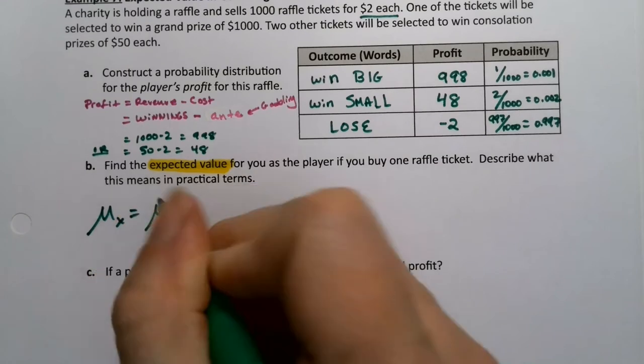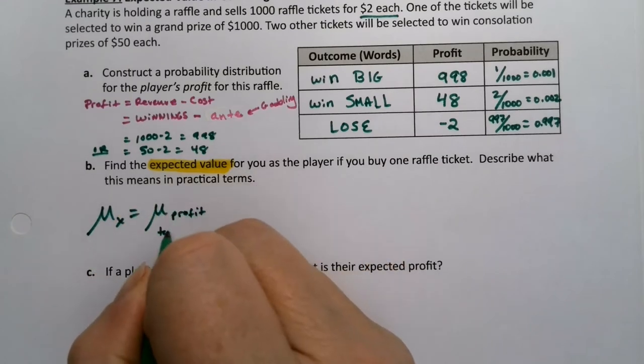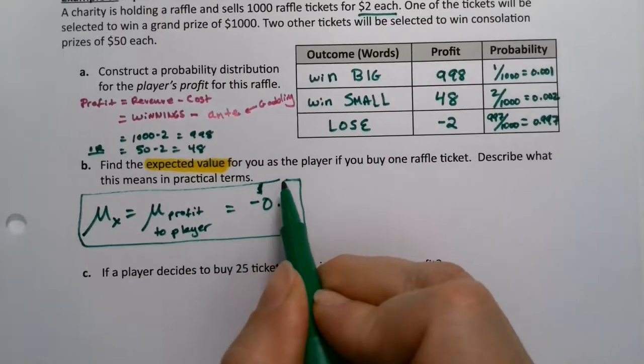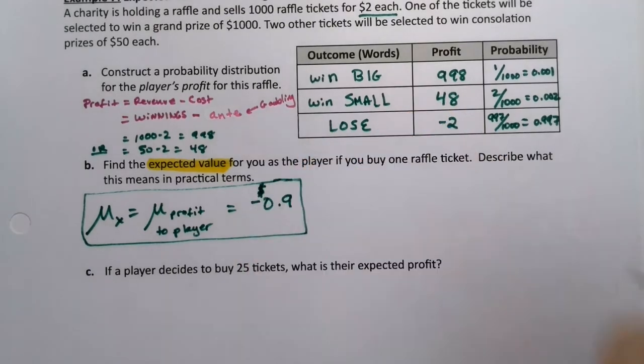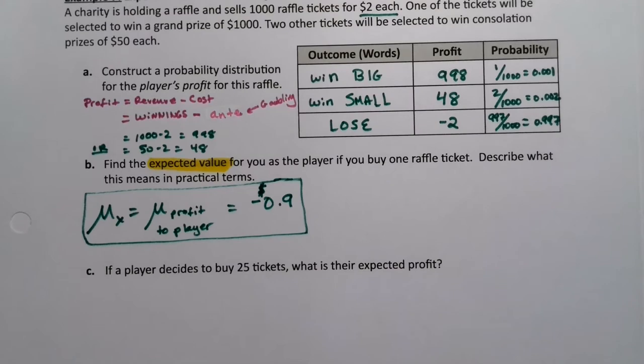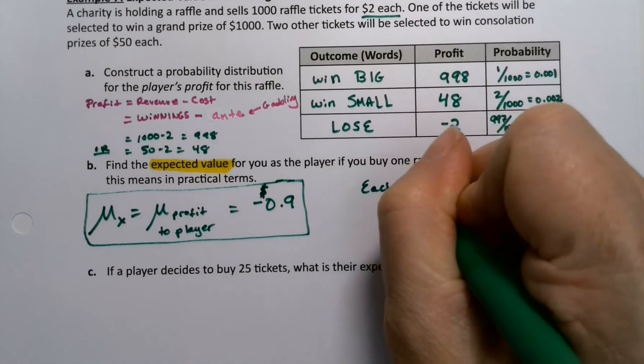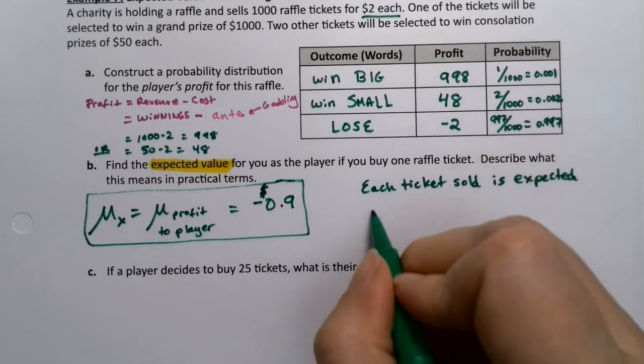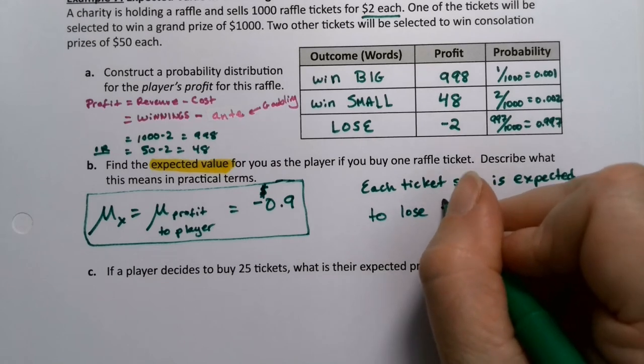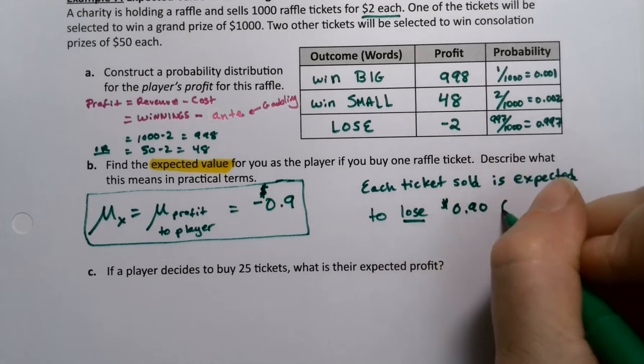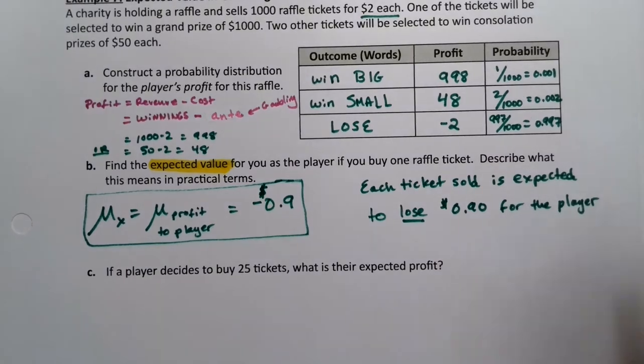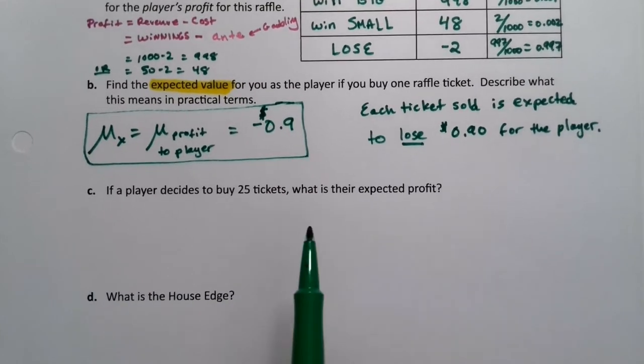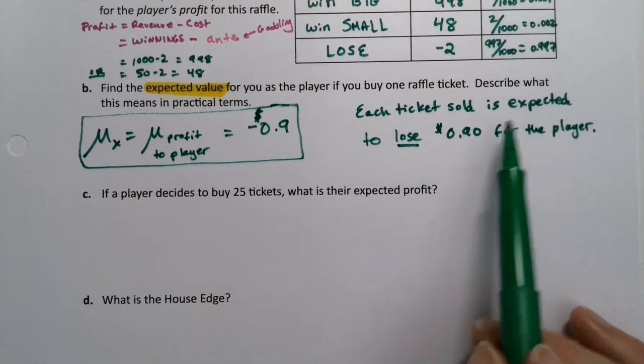So whichever way you want to find it, you'll get negative 0.9. So that's the mean of the profit for the player, which is the way we set up the table. Because of course we want to put ourselves in the shoes of the gambler. So it's negative 0.9. And of course it'd be dollars because this is money. Now describe what that means in practical terms. It means that each person that buys a ticket or each ticket sold is expected to lose 90 cents for the player. Now I know what you're thinking. Well, you can't lose 90 cents. Exactly. One single person can't. This is how it averages out for all the players.